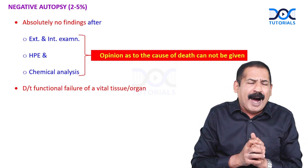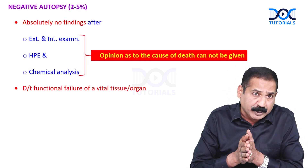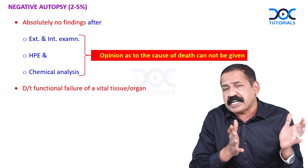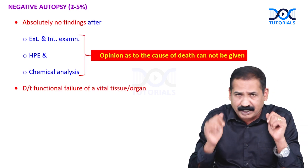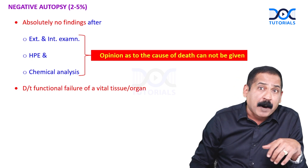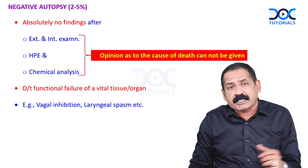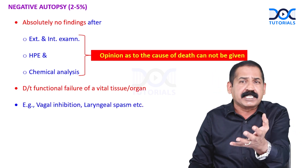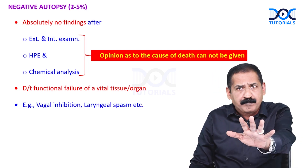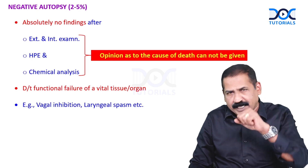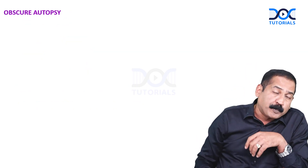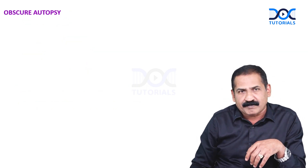Why? Because of the functional failure of a vital tissue or organ. For example, if a person dies of vagal inhibition or laryngeal spasm, there are absolutely no findings. Now, what is obscure autopsy?